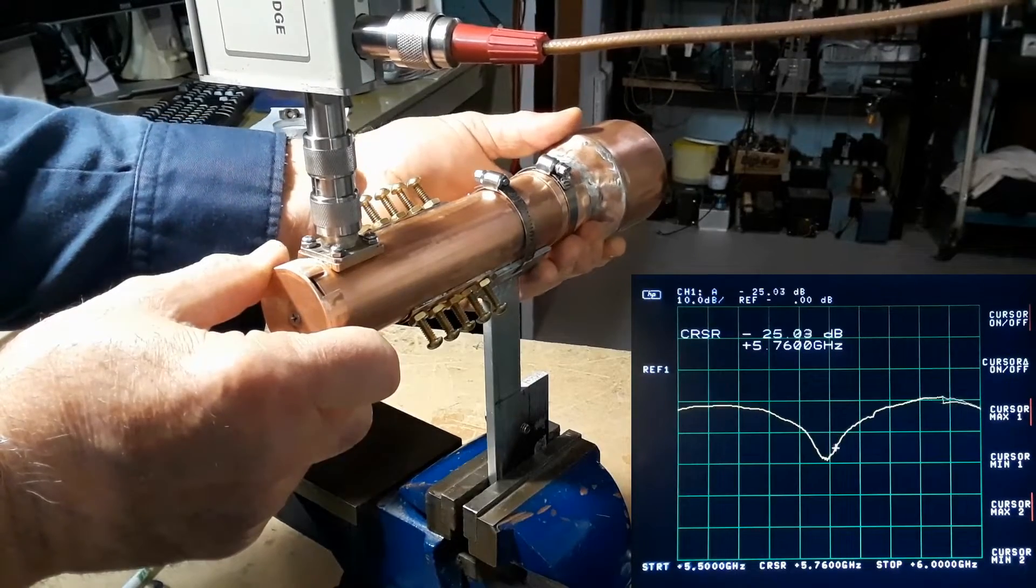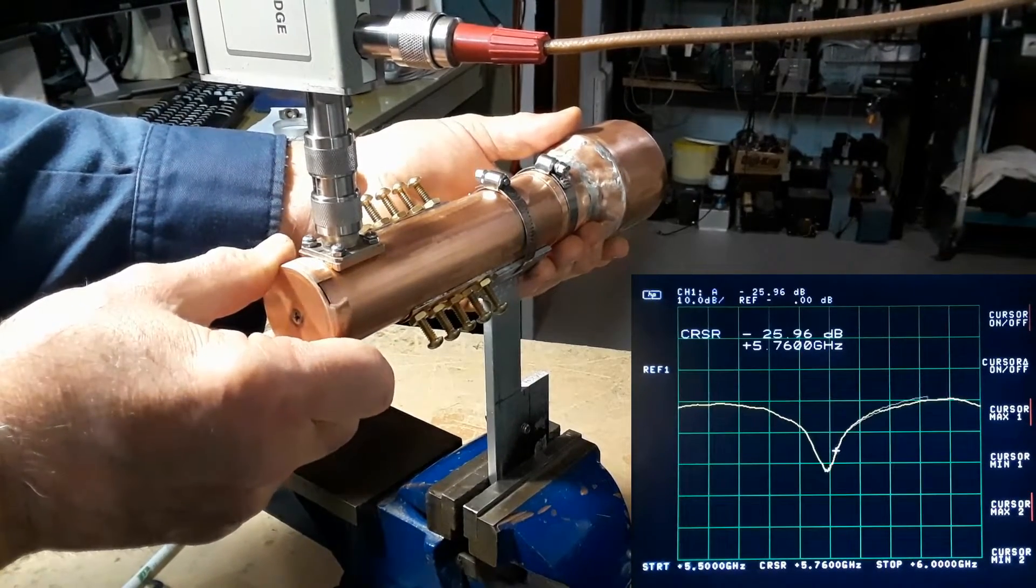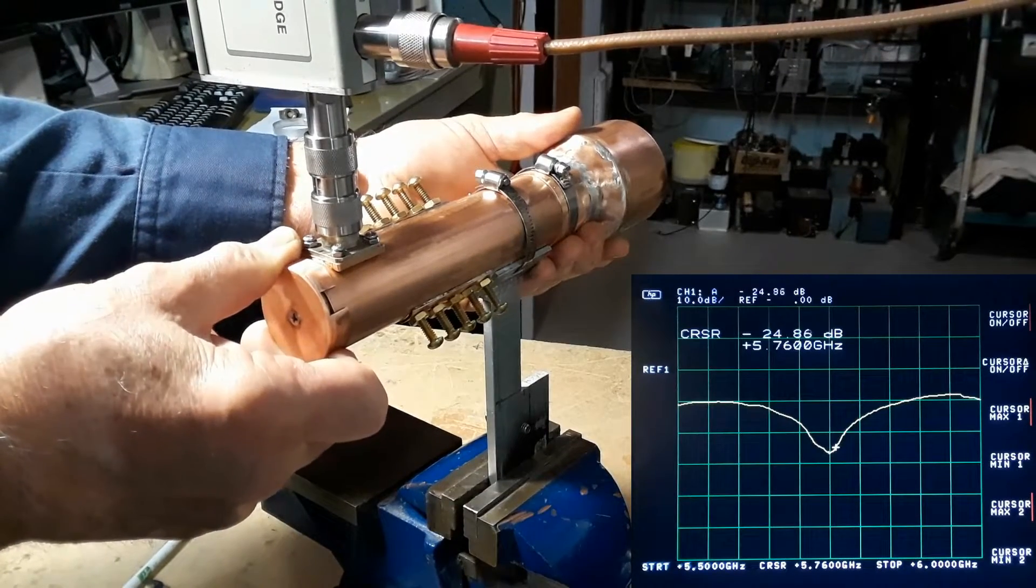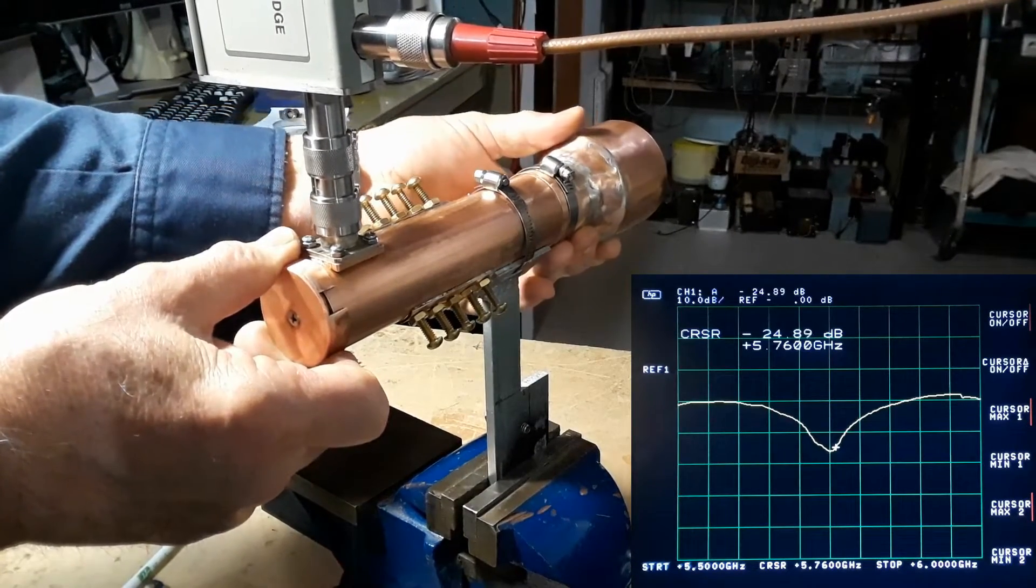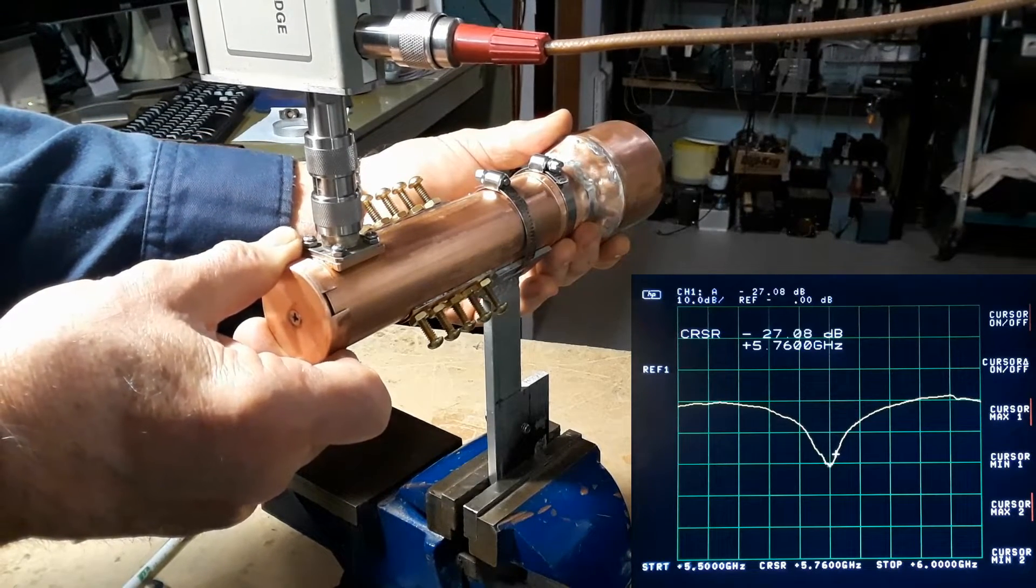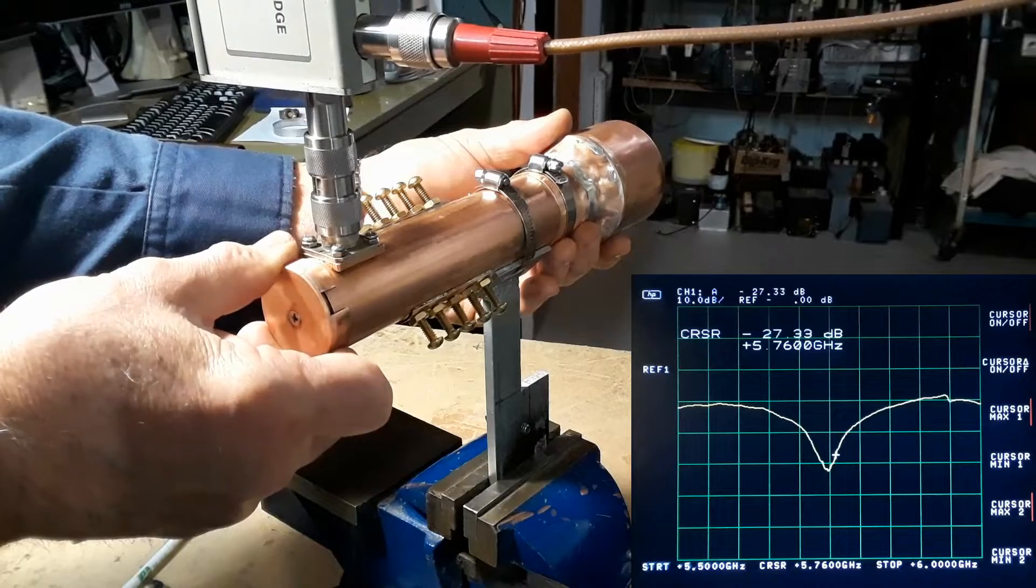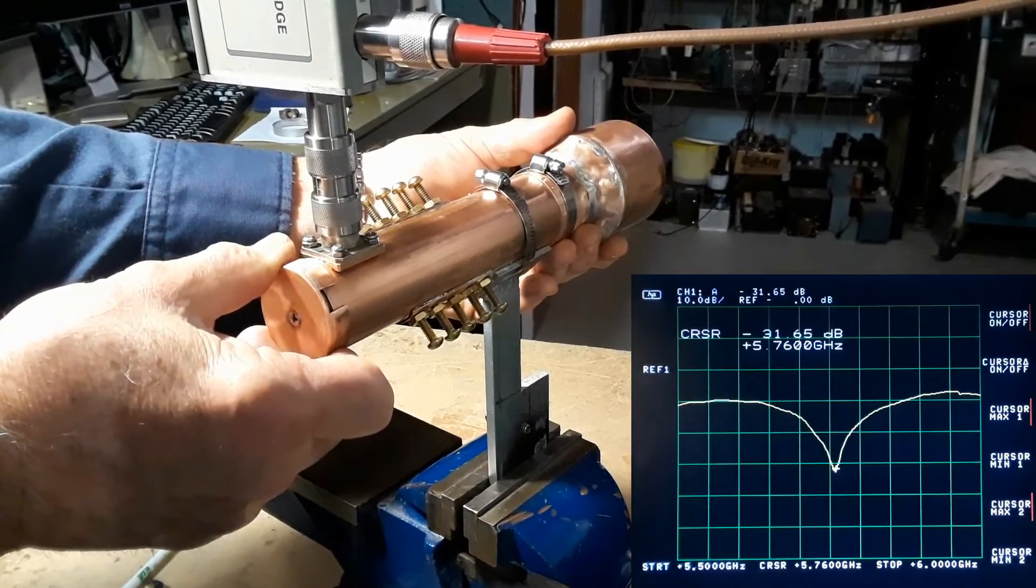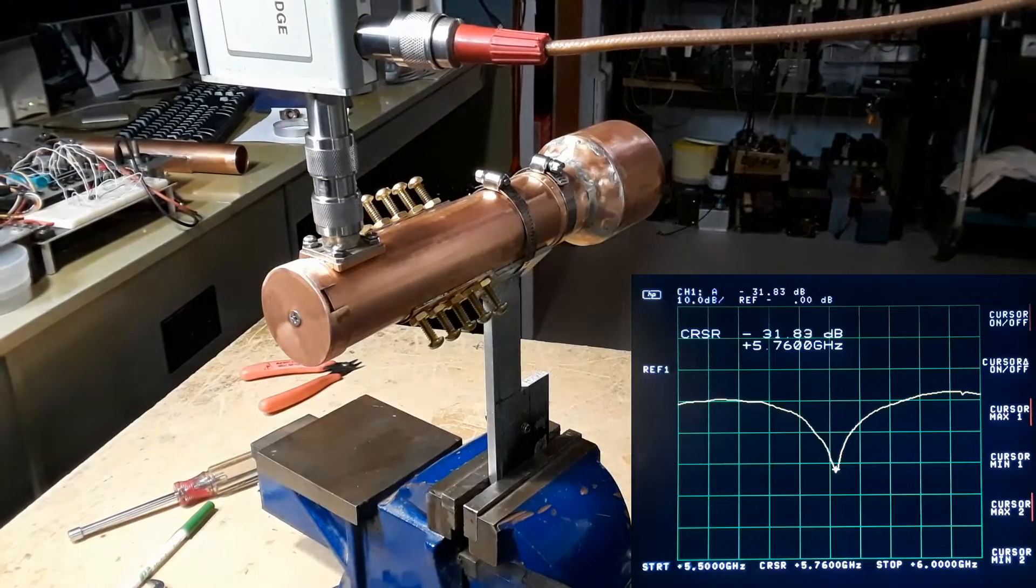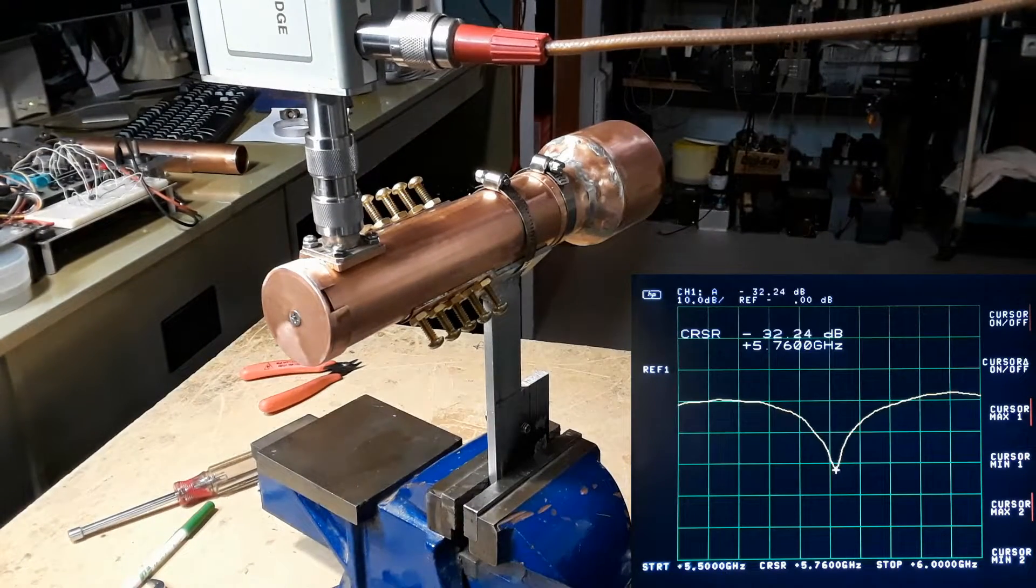As I slowly slide it on you'll see the return loss dip get deeper and deeper which is what we're after. As I slide the backplate back and forth and slowly adjust it I am also adjusting the IMU launcher in the front of the waveguide which shifts the resonant point of the dip itself. These two movements will eventually get everything right on where I want it.